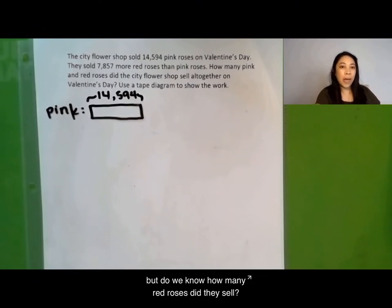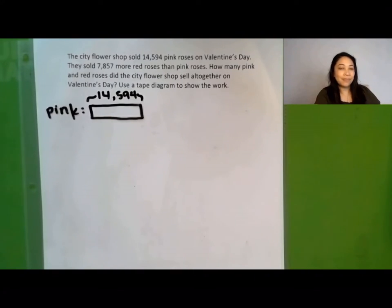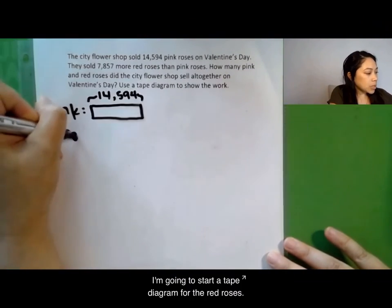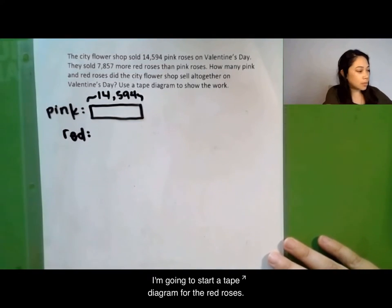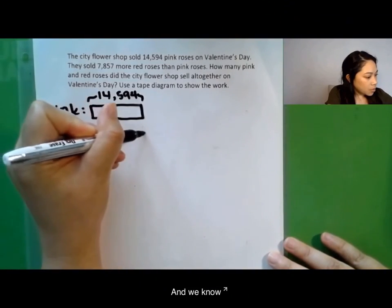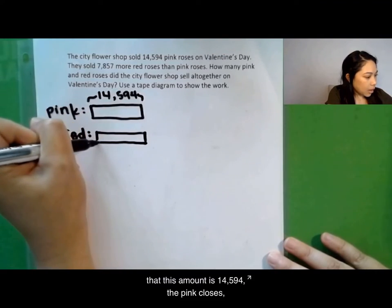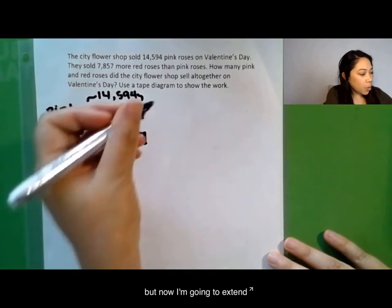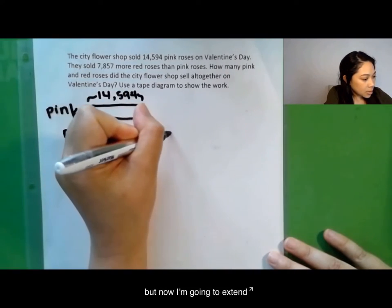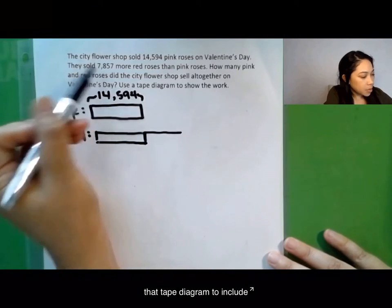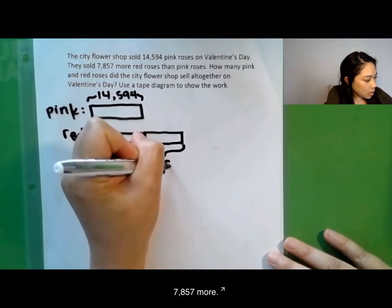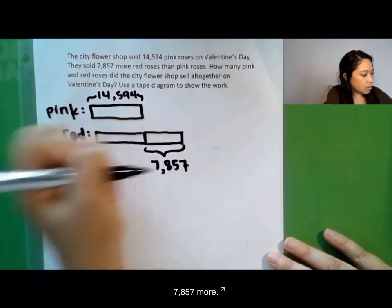But do we know how many red roses did they sell? No, we don't know that information. I'm going to start a tape diagram for the red roses and we know that this amount is 14,594 like the pink roses. But now I'm going to extend that tape diagram to include 7,857 more.